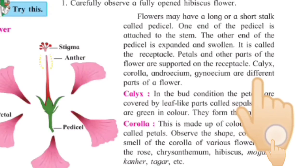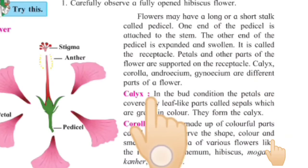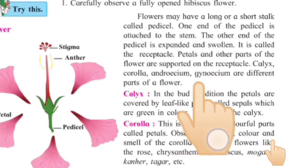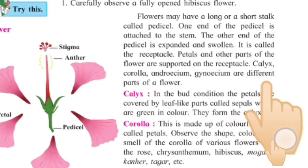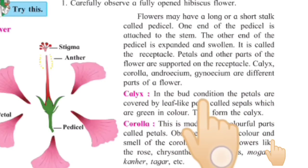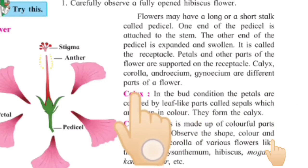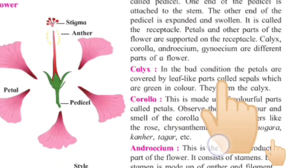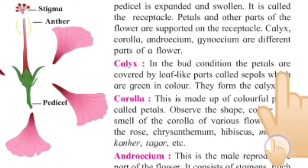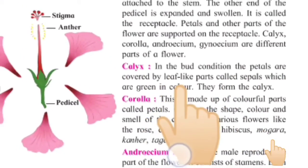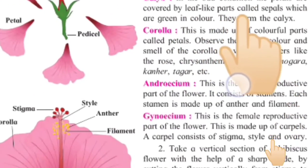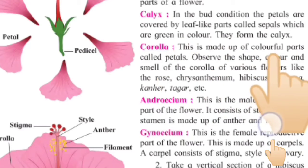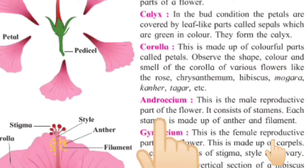Other parts of flowers include calyx, corolla, androecium, and gynoecium. The very first part is the calyx. In the bud condition, the petals are covered by leaf-like parts called sepals, which are green in color. They form the calyx.